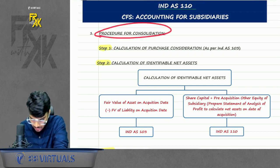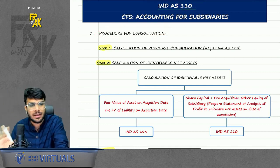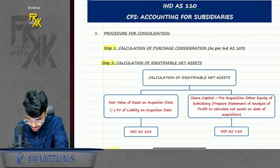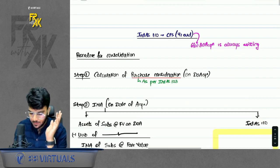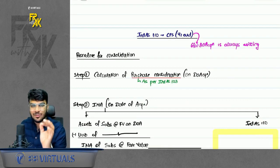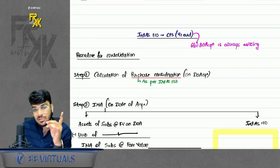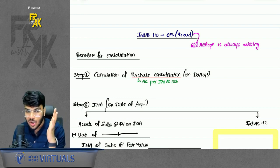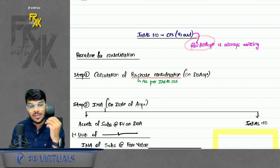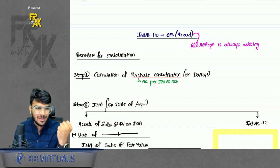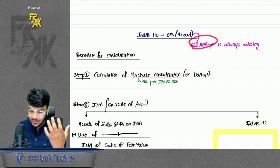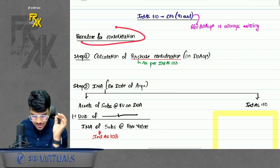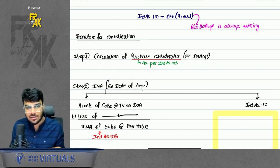In IND AS 110 we have to follow the steps of IND AS 103 again because even when preparing CFS on Day 1, the goodwill amount needs to be found. In IND AS 103 we used to find goodwill on date of acquisition by following 6 steps. So we first find goodwill on Day 1, then through that we get goodwill on year end. This is the procedure for consolidation.